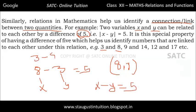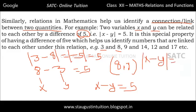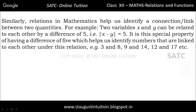3 minus 8 is equal to minus 5. So in general, the modulus of x minus y is equal to 5 is the relation. The numbers that satisfy this relation are known as the numbers of the relation. This special property of having a difference of 5 helps us identify numbers that are linked to each other under this relation.